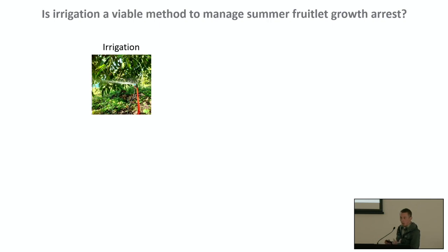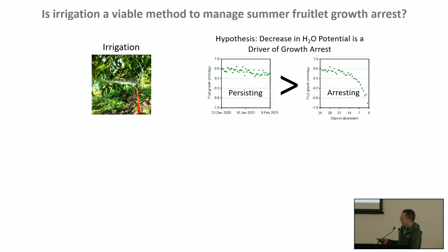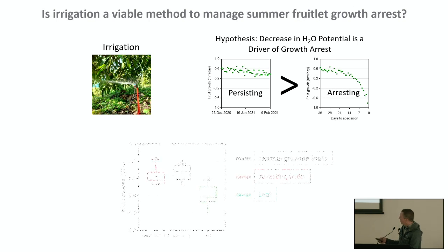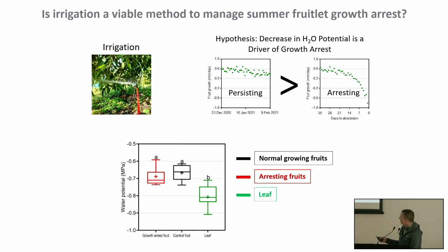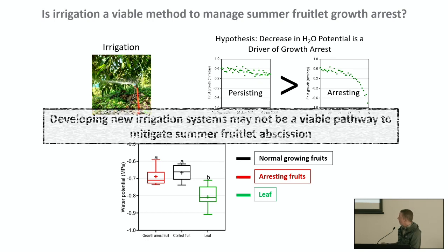We investigated whether irrigation could be used as a method to manage summer fruitlet growth arrest. If a lack of water availability is causing growth arrest and abscission, we hypothesized there would be differences in growth potential between persisting fruits and fruits that switched to a resting growth rate. What we found is that the water potential of resting fruits is no different from that of normal growing fruits. We conclude that developing new irrigation systems may not be a viable pathway to mitigate summer fruitlet abscission.